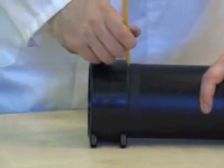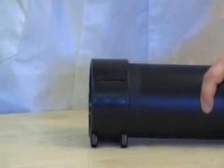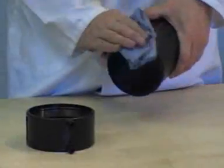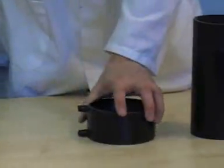Mark the full insertion depth of the fitting onto the pipe as a safeguard for full insertion. Ensure the joint surfaces are clean and free from moisture. Then clean all the surfaces both on the pipe and the fitting thoroughly using a lint free cloth or paper towel.